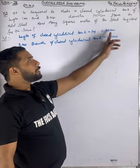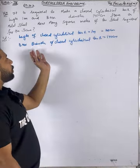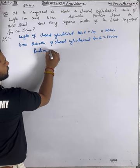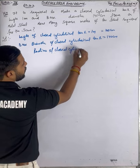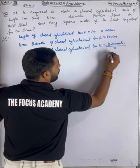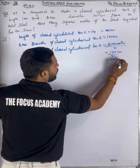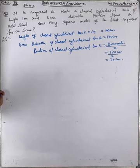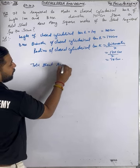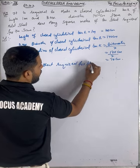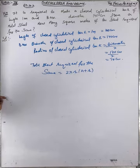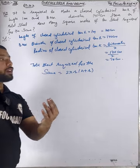Since 1 meter = 100 centimeters, height becomes 100 cm. The diameter is already in centimeters. If diameter is 140, then radius of closed cylindrical tank = diameter ÷ 2 = 140 ÷ 2 = 70 cm. Now, total sheet required = total surface area = 2πr(h + r). We use total surface area, not just lateral surface area, because all surfaces are needed.